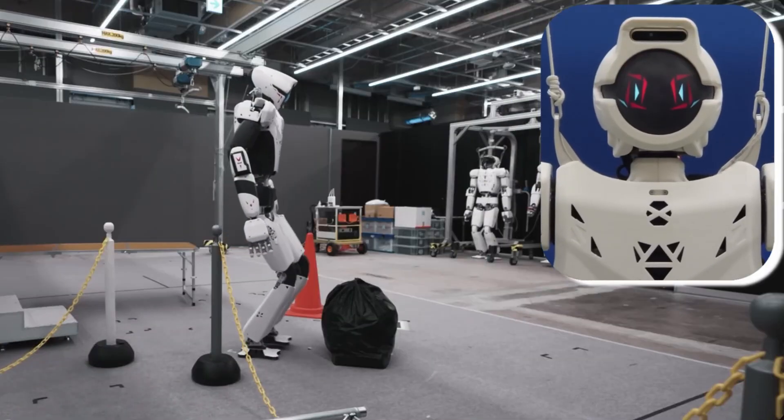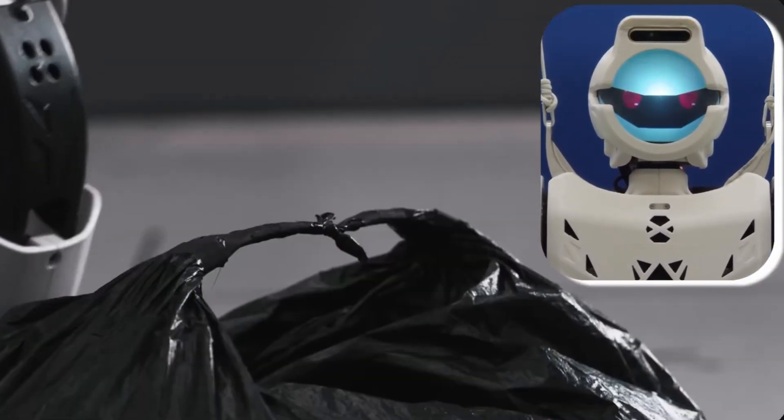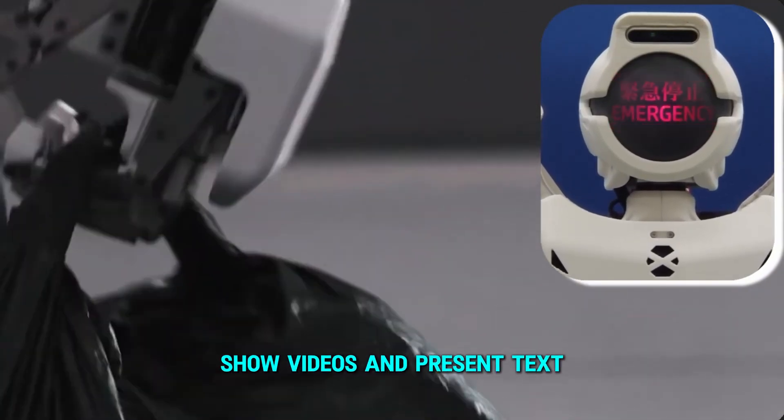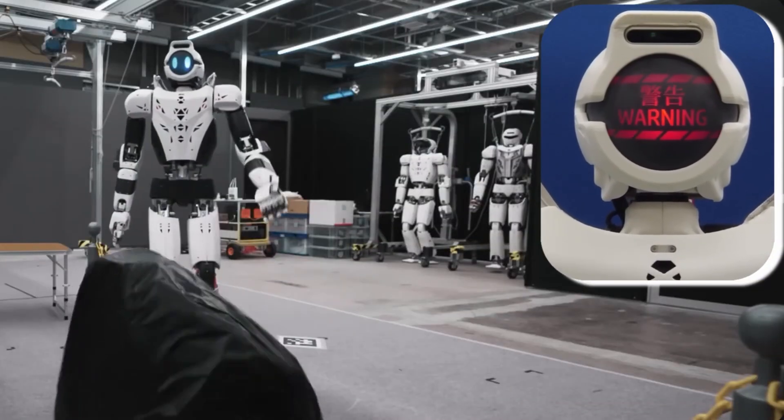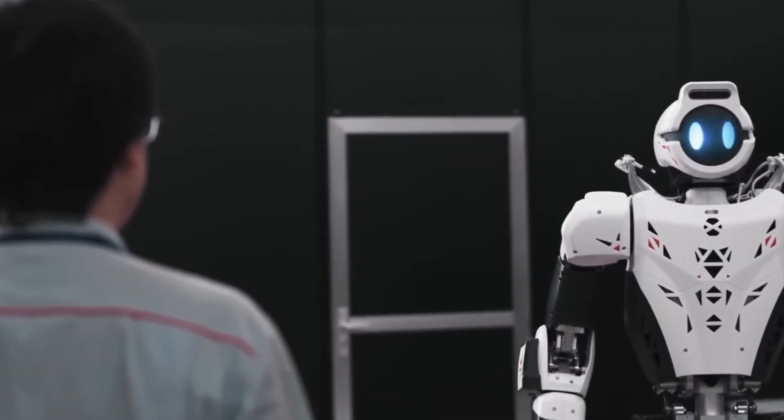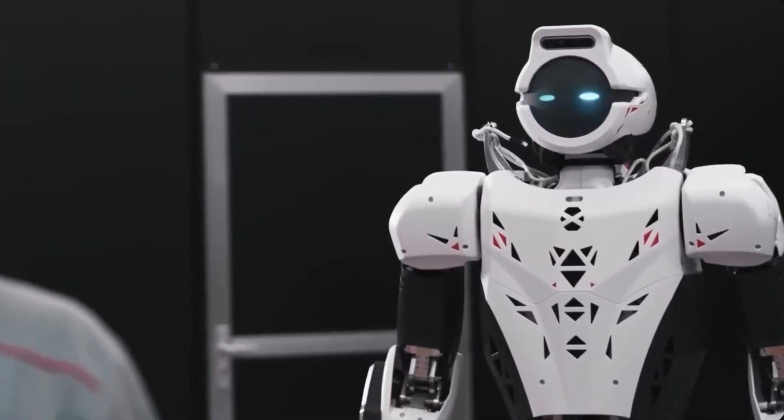The spherical monitor on Kaleido-8.0 enables it to display human-like expressions, show videos, and present text, facilitating more effective communication. Such capabilities make the robot incredibly approachable and relatable, fostering a deeper human-robot connection.